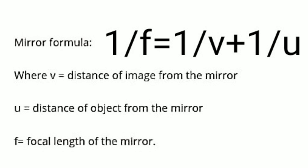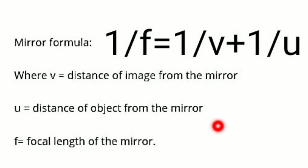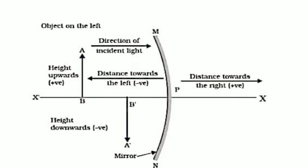Now we come to sign conventions — specifically, the sign convention for reflection by a spherical mirror. Reflection of light by a spherical mirror follows a set of sign conventions called the New Cartesian Sign Convention. In this convention, the pole of the mirror is taken as the origin. The principal axis of the mirror is taken as the X-axis of the coordinate system.